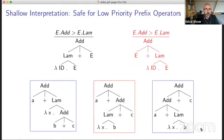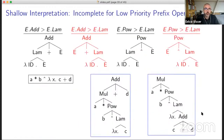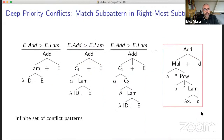However, this introduces another problem: it's now incomplete. There are now some trees that don't get disambiguated. For example, if we have the sentence a plus lambda x b plus c, we get the preferred tree but also a tree where the addition we'd like to be under the lambda is on top. To prevent that, we can no longer use shallow patterns — we need deep patterns, an infinite amount of patterns. We've formalized that in a notion of deep priority conflicts.